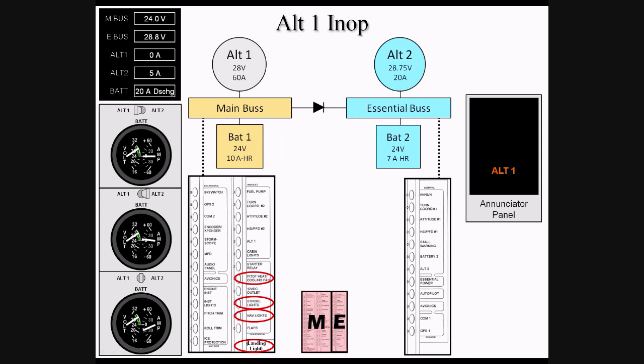The four highest draw items on the main bus are the pitot heat, strobe lights, nav lights, and landing light. Conveniently, these items are grouped together as switches on the bolster panel. Taken together, these items draw approximately 16 amps, or almost half of the maximum potential draw on BAT-1. Simply by flipping these four switches, we are able to triple or even quadruple the amount of time that BAT-1 can continue to power the main bus items.